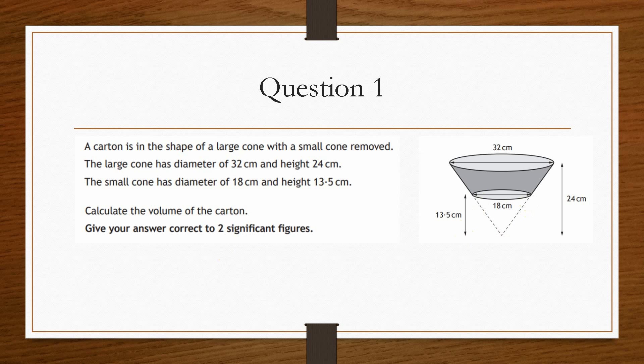So that means we're going to have to do multiple volume calculations, and then have to do some form of subtraction or addition. So we know from the problem statement that a carton is in the shape of a large cone with a small cone removed. So this shaded region is the carton.